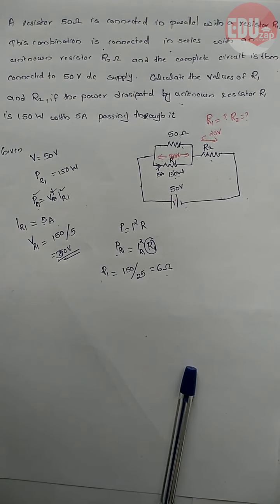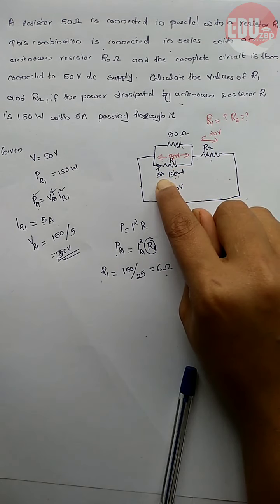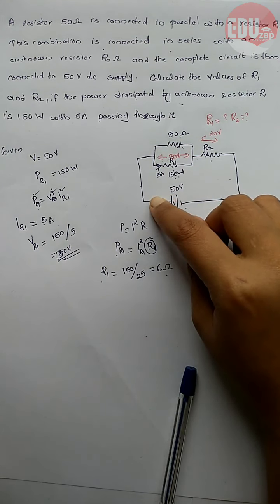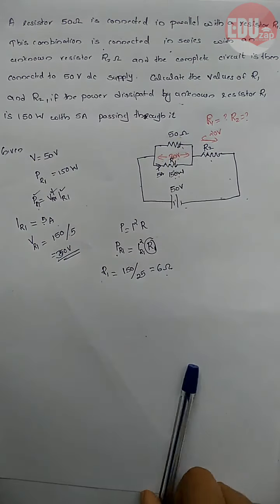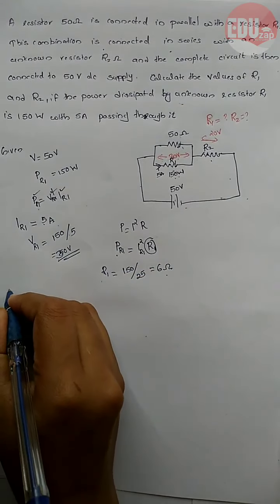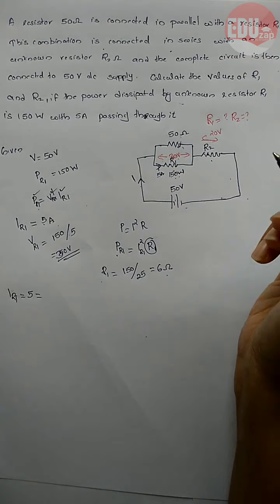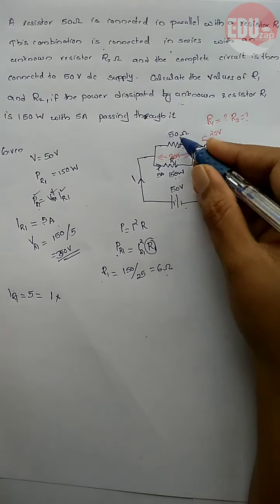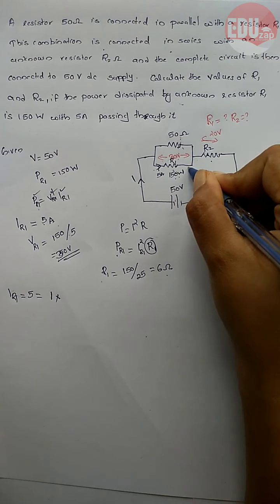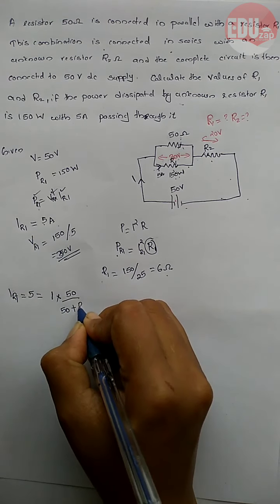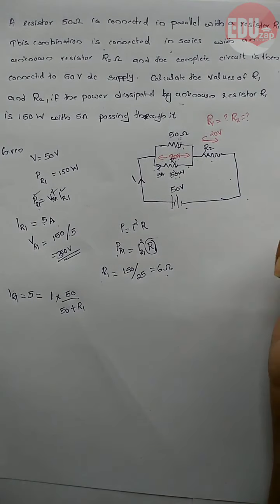Now we need to find the total current. The current through R1 is 5 ampere. Using the current divider rule, I_R1 equals source current I multiplied by the opposite resistance 50, divided by the sum of resistances 50 plus R1, which is 56. So: 5 = I × 50/56.